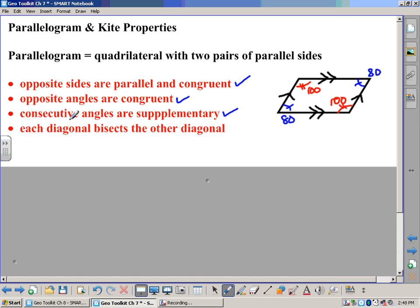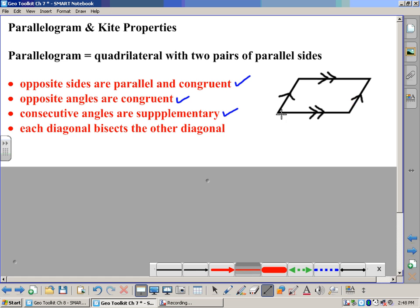Finally, the last one is that each diagonal bisects the other. For instance here, if I were to go ahead and draw in those diagonals, it would look something like this. Here's one diagonal. Here's the other diagonal.